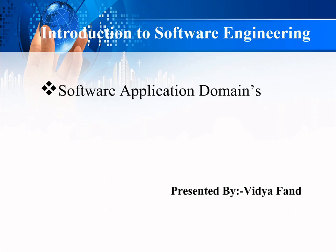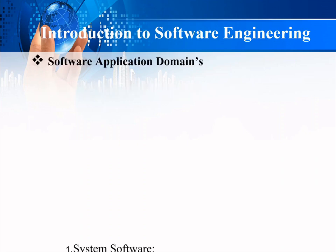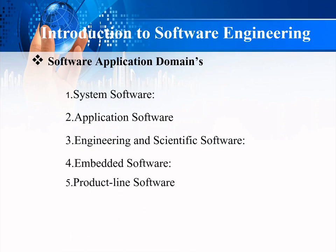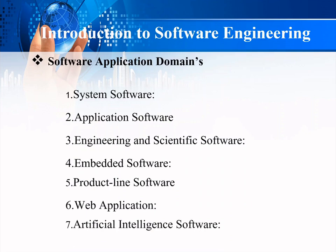In software application domains there are seven main categories: system software, application software, engineering and scientific software, embedded software, product line software, web application, and artificial intelligence software. Now let us see them one by one.